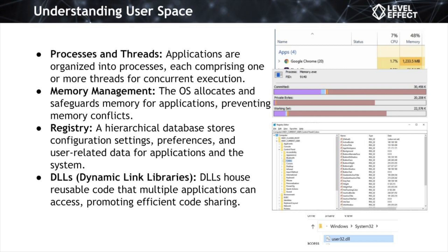The space allocated for one process in memory is separated and shouldn't interfere with another process's allocated memory space. Then there's the registry, which is a centralized repository that holds configuration settings for system preferences and user-specific data, like your desktop background. It acts like a database for applications and the operating system to access crucial information for a consistent user experience. Finally, there are DLLs, or dynamic link libraries — collections of reusable code modules that multiple applications can share, allowing applications to access pre-existing code without duplicating it or developers having to rewrite it, leading to more efficient memory usage and easier maintenance.